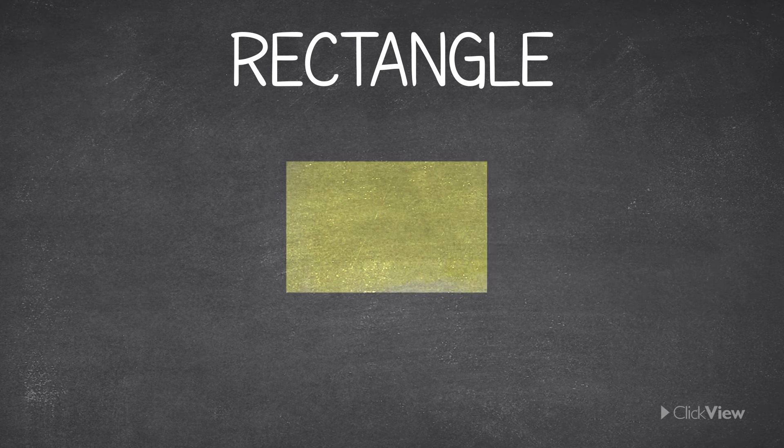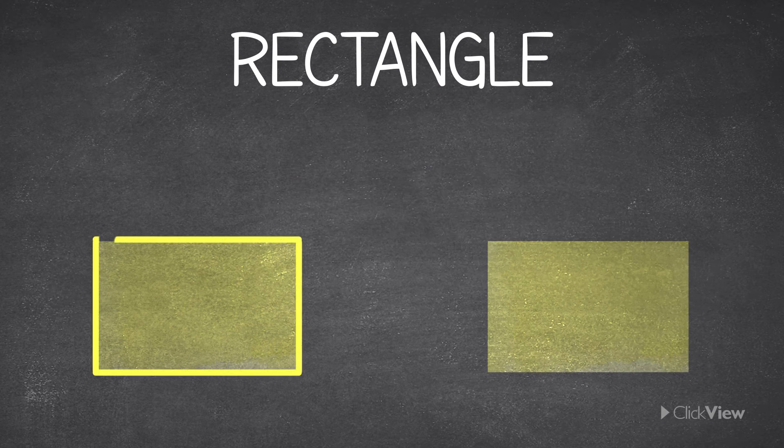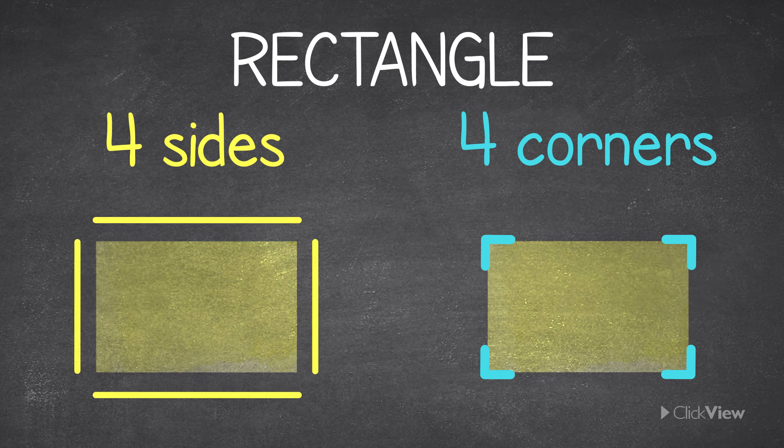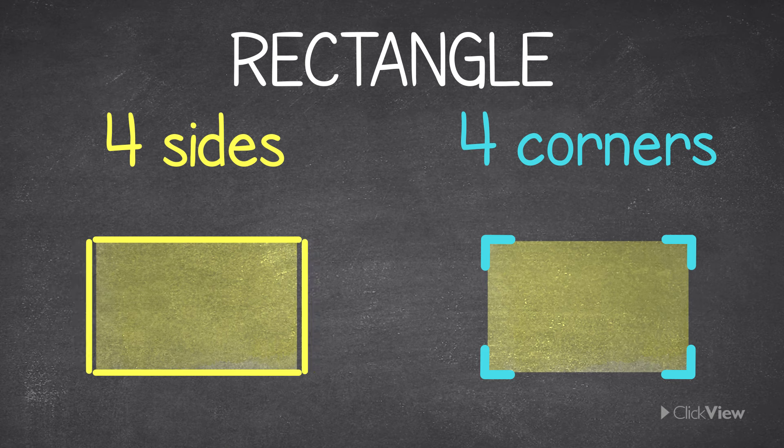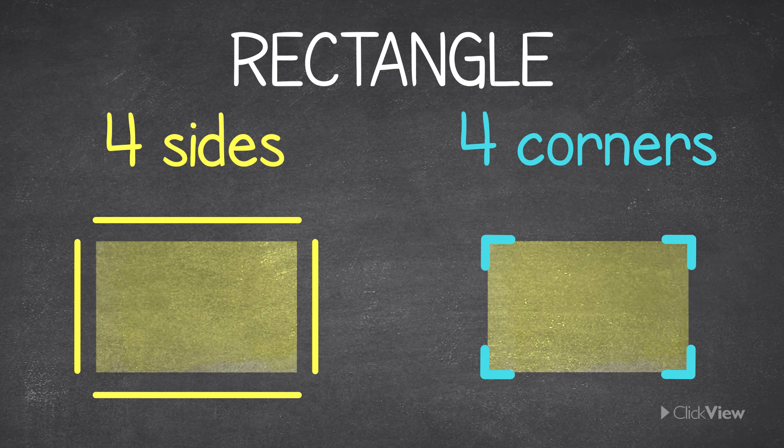This shape is a rectangle. Can you see its four sides and four corners? Rectangles have two pairs of sides that are the same length and opposite to each other. These sides are also parallel.